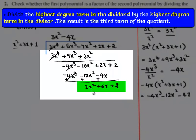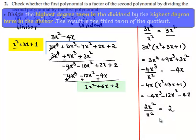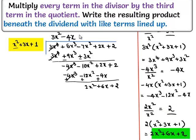Minus 10x squared plus 12x squared gives 2x squared, 2x plus 4x gives 6x, and this is plus 2. So the new dividend is 2x squared plus 6x plus 2, which has the highest degree term as 2x squared, and the highest degree term of the divisor is x squared. So on dividing them, we get 2. So 2 multiplied by the divisor, which is x squared plus 3x plus 1, gives 2x squared plus 6x plus 2. So 2 can be written at the place of the quotient and this product can be written here.